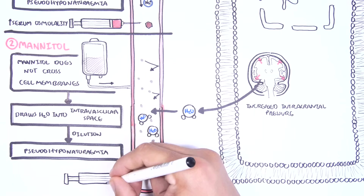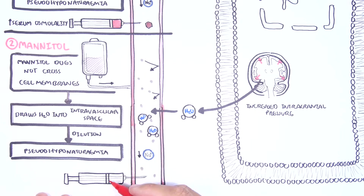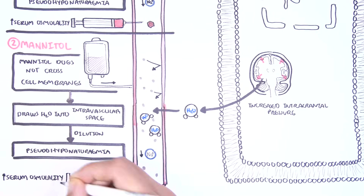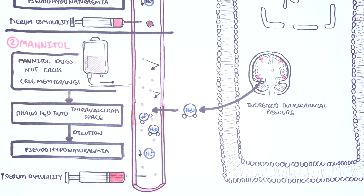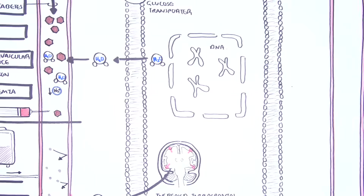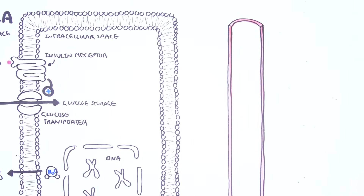Osmolality is a measure of the number of dissolved particles in a fluid. When you have high plasma osmolality, it means you have high numbers of solutes, such as glucose and mannitol, for example.